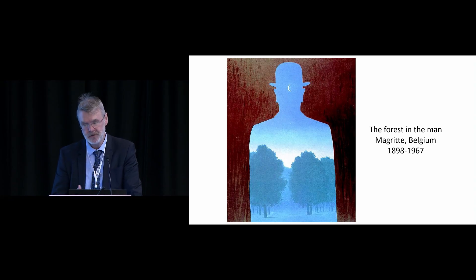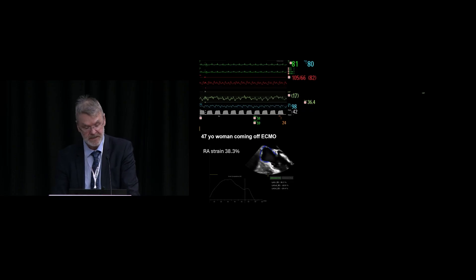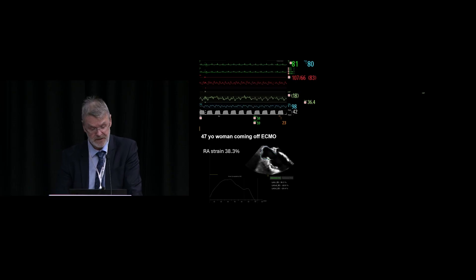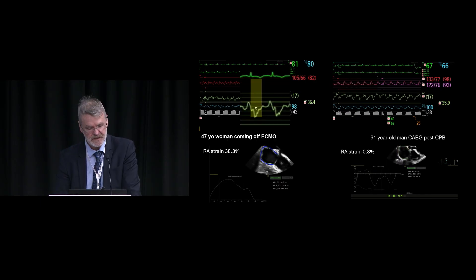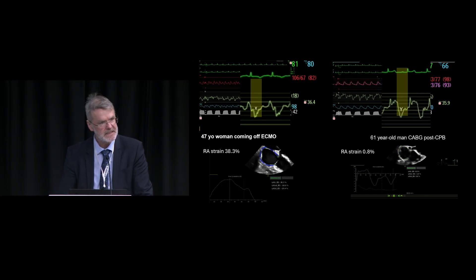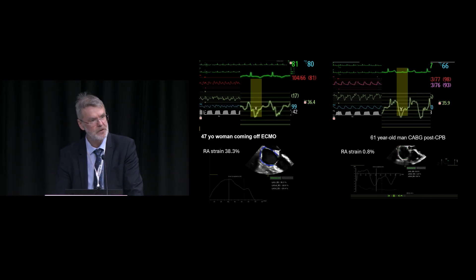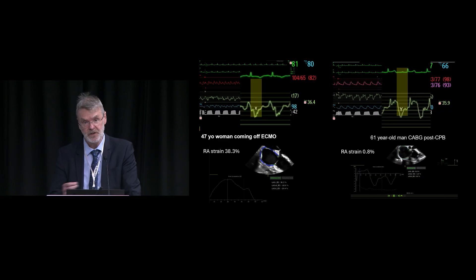It is more important to look at the waveform than to look at the values. For example, when you have someone unstable with a CVP of 17 — a 47-year-old woman coming off ECMO with a normal right atrium and right ventricle — versus the same CVP value in a 61-year-old man post-CABG, the values are exactly the same but you make the difference by looking at the waveform: one has an x descent and the other a y descent. The same elements apply when looking at the right ventricular pressure waveform, which tells you what type of RV dysfunction you have and where you are in that abnormality.